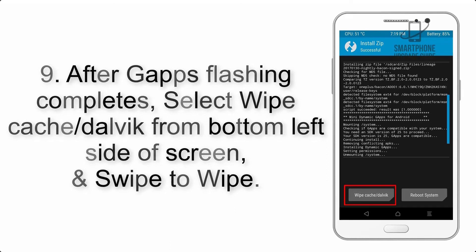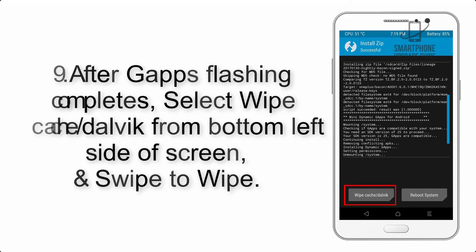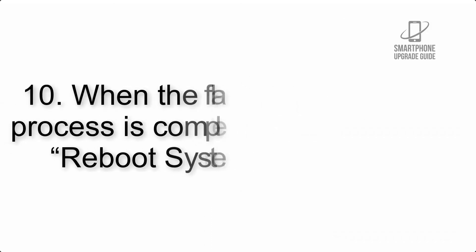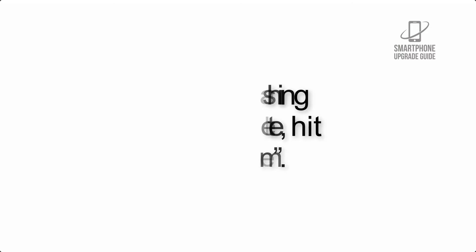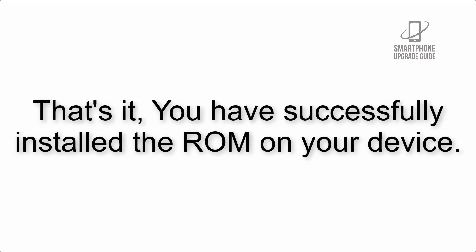Step 8: Flash the gapps zip package in the same manner. Step 9: After gapps flashing completes, select Wipe Cache and Dalvik from the bottom left side of the screen and swipe to wipe. Step 10: When the flashing process is complete, hit Reboot System. That's it — you have successfully installed the ROM on your device.